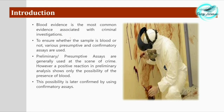Blood is the most common evidence associated with criminal investigation — it is the most commonly encountered physical evidence at the scene of crime. To confirm whether a sample is blood or not, we carry out presumptive as well as confirmatory assays. 'Assays' means examination — to confirm whether a particular stain found at the scene of crime is blood or not.